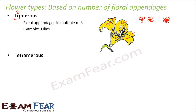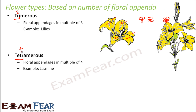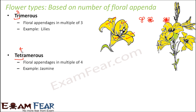The next one is tetramerus. The word tetra means four, so floral appendages are in multiples of four. An example would be jasmine — maybe four petals, or eight petals, or sixteen petals. So jasmine is one example of tetramerus flowers.